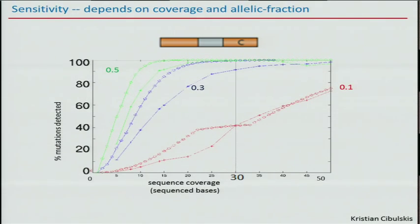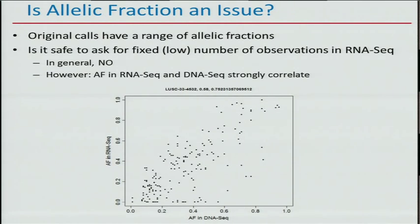There is a question of power, of course. Depending on what coverage you get in RNA-seq or DNA-seq, you have a finite probability to observe the event at all, as a function of allelic fraction. If the original call has 10% allelic fraction, you need many reads to observe it, and even more to confidently say it's not there. Fortunately, there's a beautiful correlation between allelic fraction in DNA-seq and RNA-seq, which means we can take the DNA allelic fraction, estimate power given the RNA-seq coverage at that site, and compute the probability to observe it.